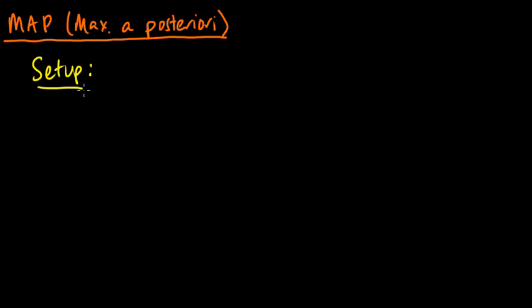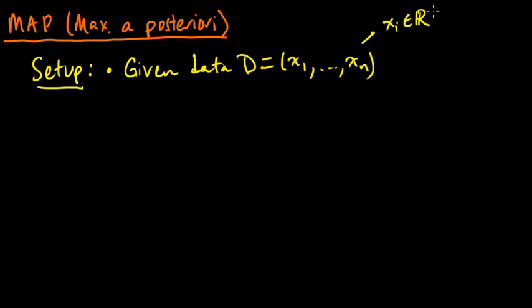So the setup for computing a MAP is the following. We're given some data, d, which is some points x1 to xn. These are just points in some, typically in some d-dimensional real space. Or more generally they could just be some vectors or scalar quantities. So we're given some data, and we assume a probabilistic model. We assume, in particular,